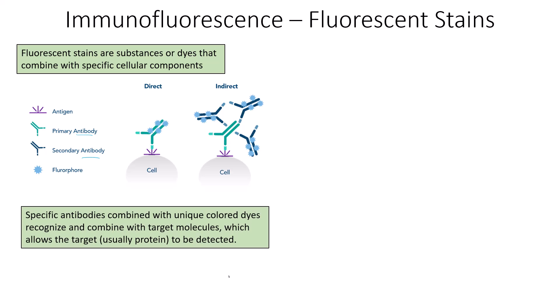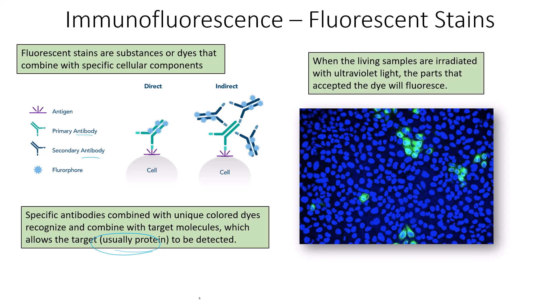Specific antibodies combined with unique colored dyes recognize and combine with target molecules, which allows the target — usually a protein — to be detected. The antibody is labeled and allowed to attach to its specific antigen. We can radioactively or fluorescently dye these particular cell components, because the antibodies are proteins that attach to antigens, which are also proteins, allowing us to look for the presence of those particular antibodies within a living tissue sample.